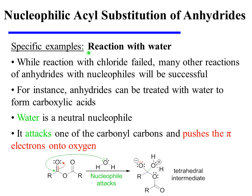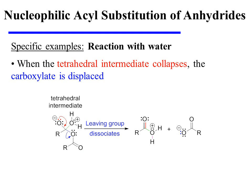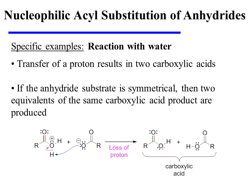Let's now turn our attention to the reaction of anhydrides with water. While the reaction with chloride failed, many other reactions of anhydrides with nucleophiles will be successful. For instance, anhydrides can be treated with water to form carboxylic acids. Water is a neutral nucleophile. It begins the reaction by attacking one of the two carbonyl carbons of the anhydride. Pi-bonding electrons are pushed onto oxygen as a result, and a tetrahedral intermediate is formed. When this tetrahedral intermediate collapses, the carboxylate is displaced, forming an oxonium ion as well as the carboxylate. Finally, the transfer of a proton results in two carboxylic acids.